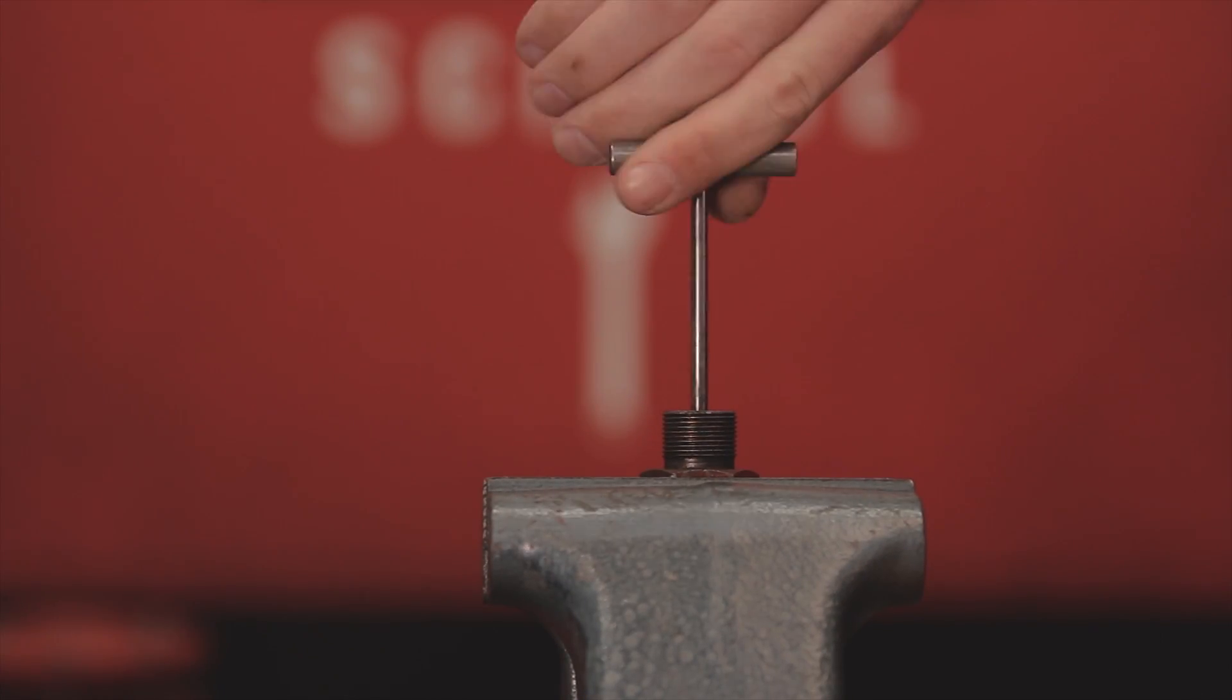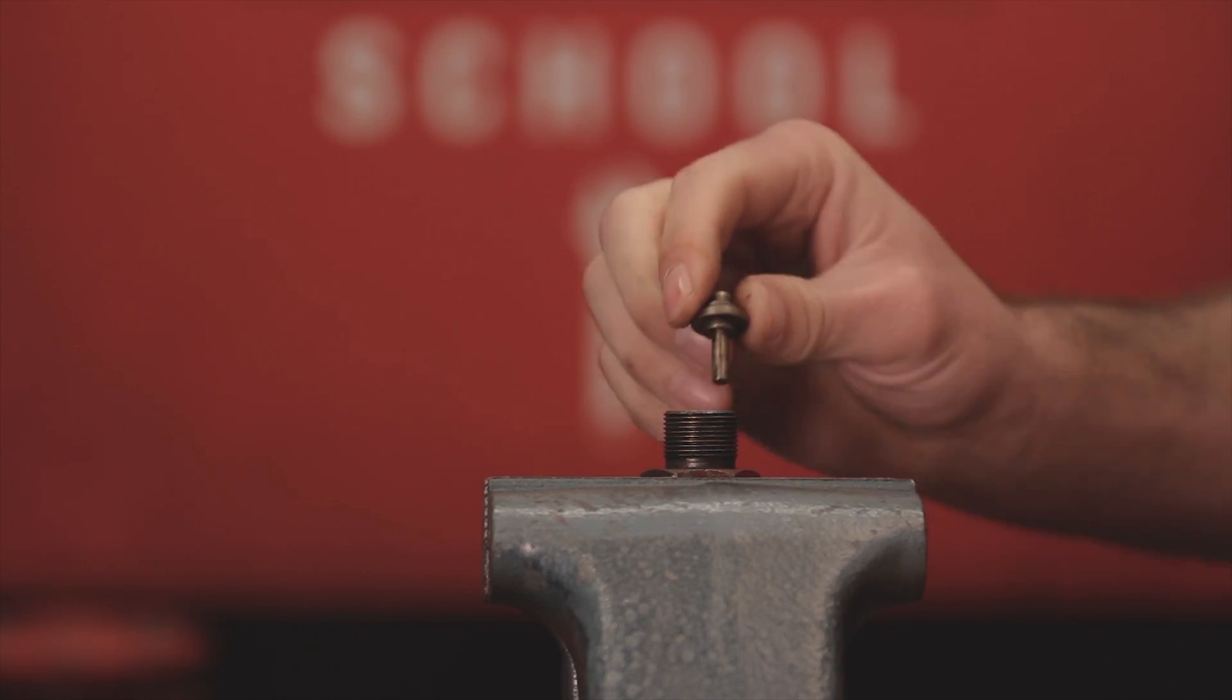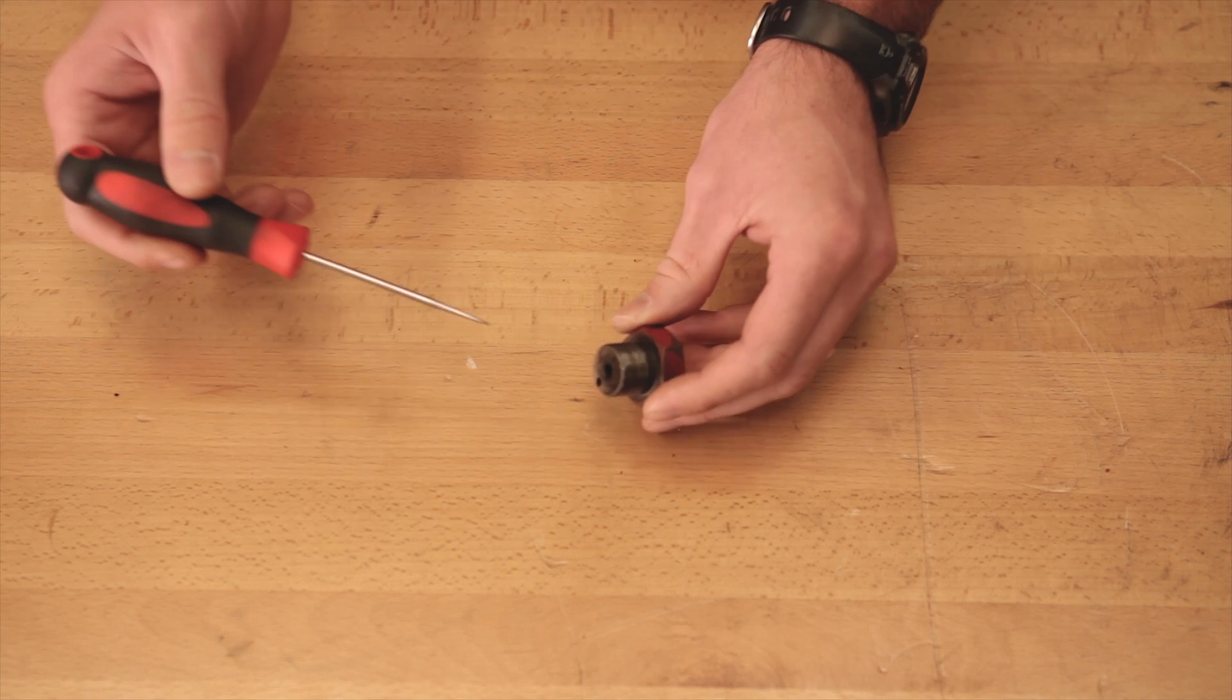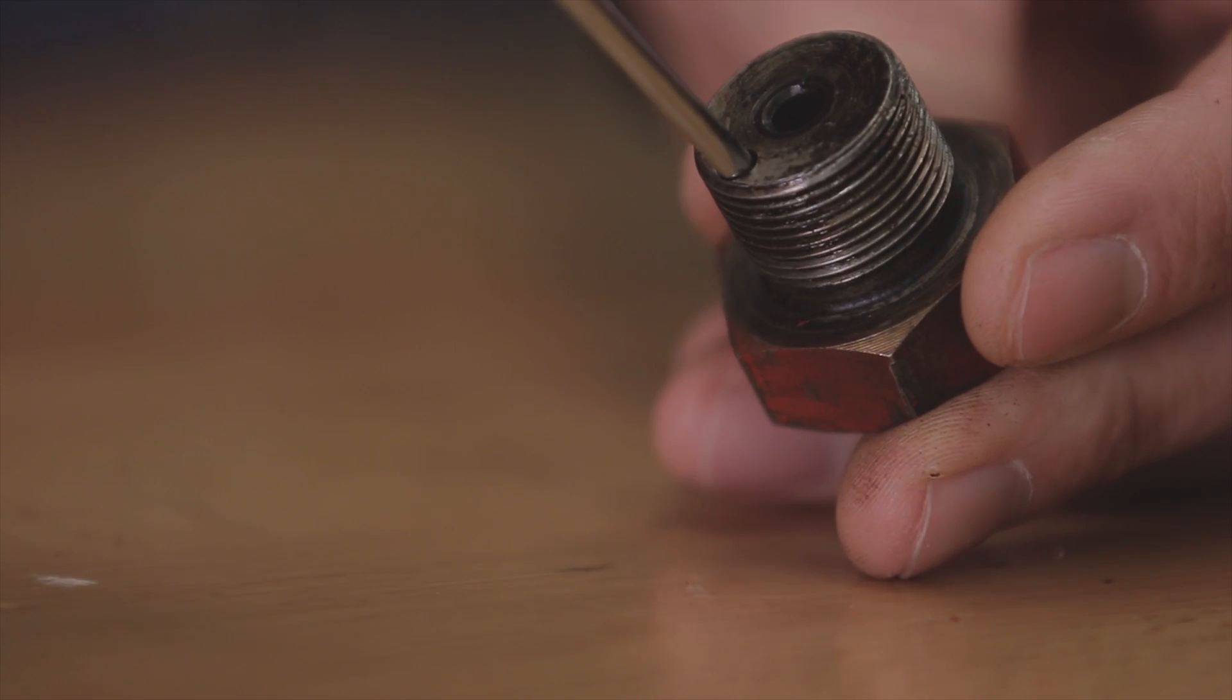If there is interference between the cap and the check valve, clean the check valve cap with the appropriate sized reamer. Make sure the communicating hole is clear. That can be done with an air nozzle or an awl.